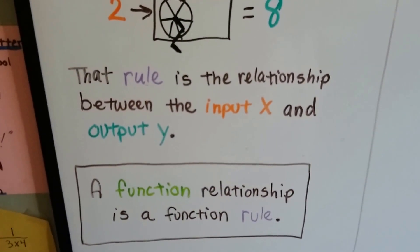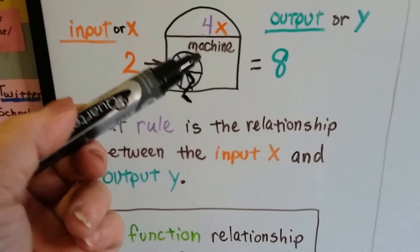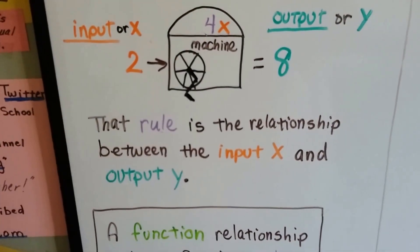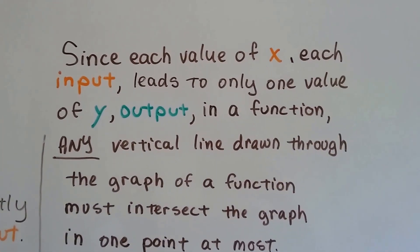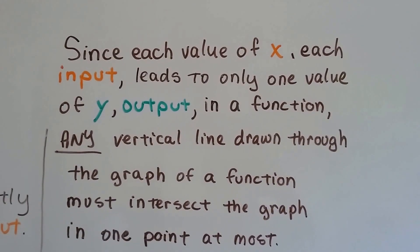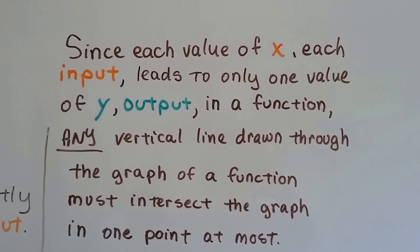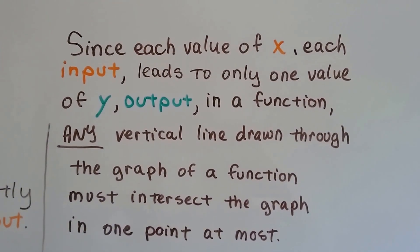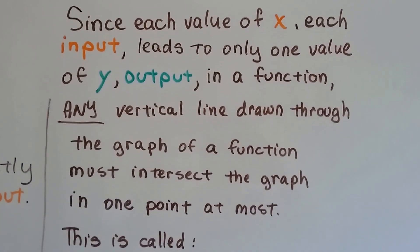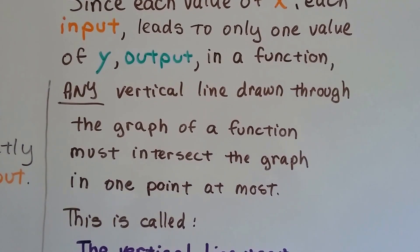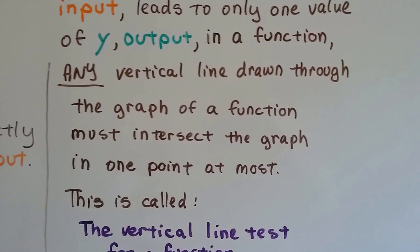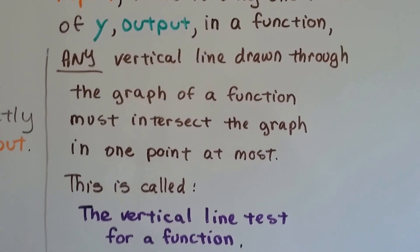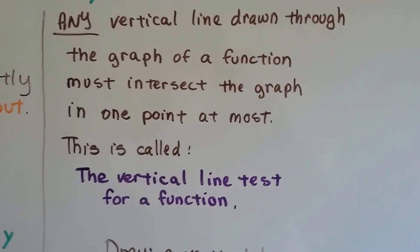A function relationship is a function rule — like this one's rule is 4. Well, since each value of x, each input, leads to only one value of y, an output, in a function, any vertical line drawn through the graph of a function must intersect the graph in one point at most. This is called the vertical line test for a function.